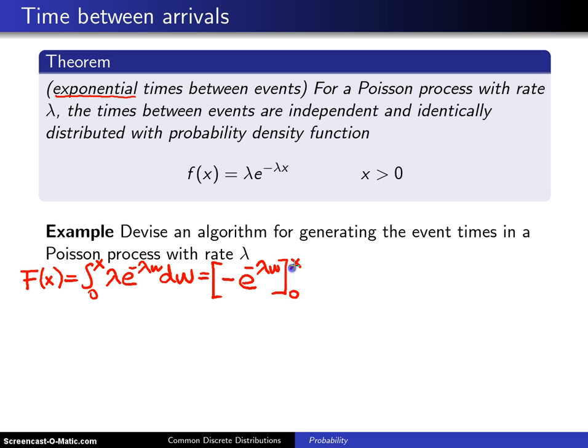Evaluated from 0 up to x. When you plug in 0 you get e^0 which is 1—notice the negatives are going to cancel there—and when you plug in x you will get e^(-λx).